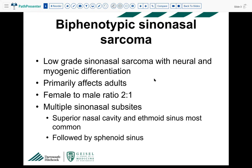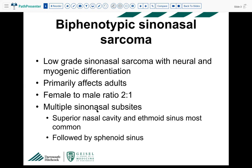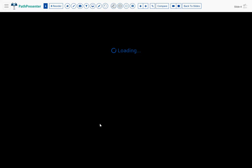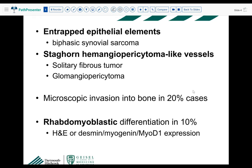Biphenotypic sinonasal sarcoma is a low-grade sinonasal sarcoma with neural and myogenic differentiation. It primarily affects adults with a female to male ratio of 2:1. You can see it at different subsites in the sinonasal area — most commonly in the superior nasal cavity and ethmoid sinus, followed by the sphenoid sinus. One caveat is that you can actually see entrapped epithelial elements, which raises biphasic synovial sarcoma in the differential.